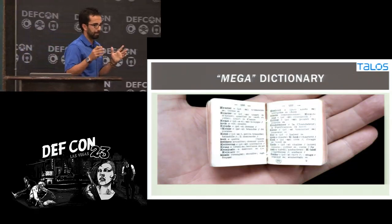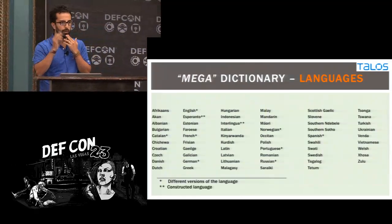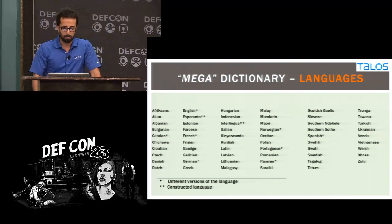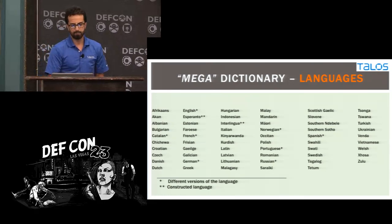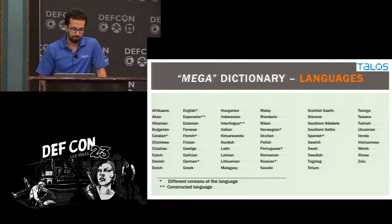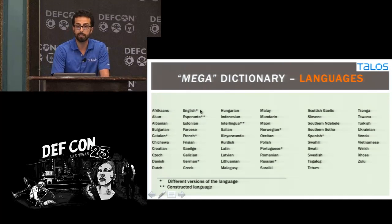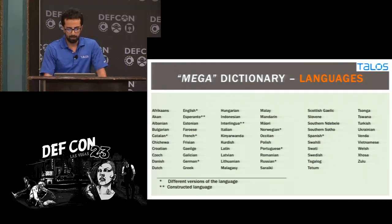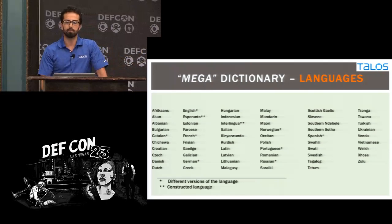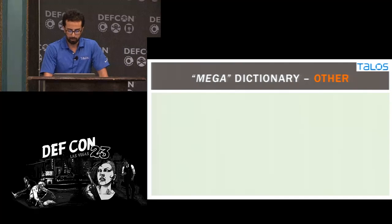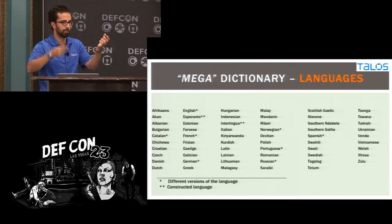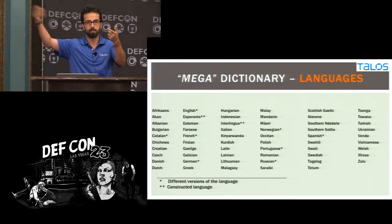The first part is the mega dictionary. I found dictionaries for almost 70 different languages from the Internet. Some are constructed languages; for English I have multiple versions such as British and American English dictionaries. Out of these dictionaries I only want the words — not the definitions. I just want the keys.